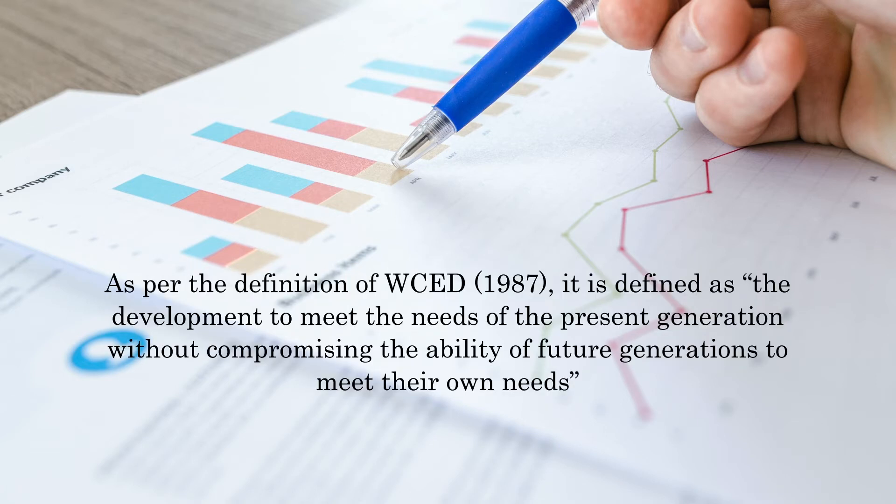As per the definition of the World Commission on Environment and Development, sustainable development is defined as development that meets the needs of the present generation without compromising the ability of future generations to meet their own needs. The definition may have some limitations, but the reality is that we need a way of development that maintains the balance between environment and society.